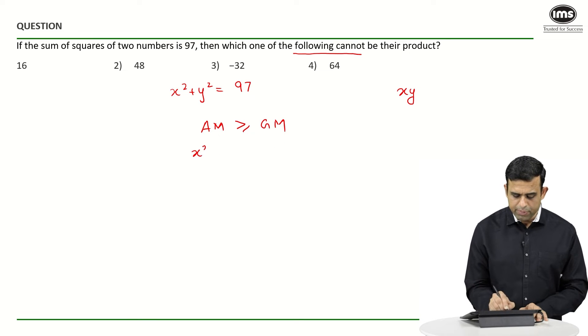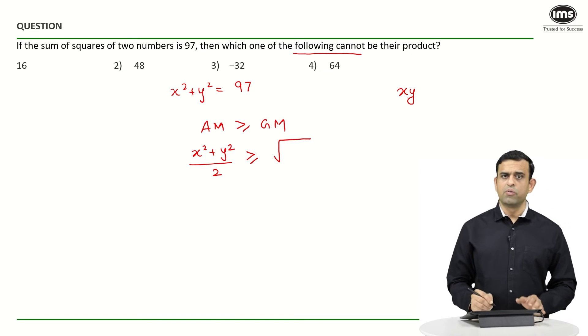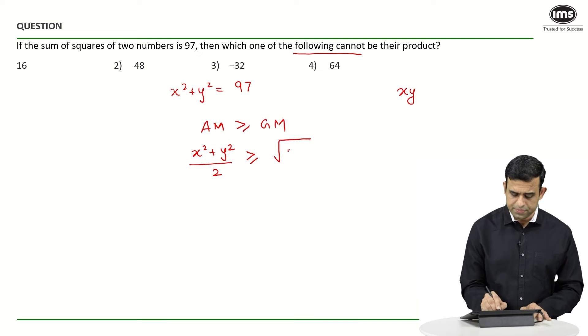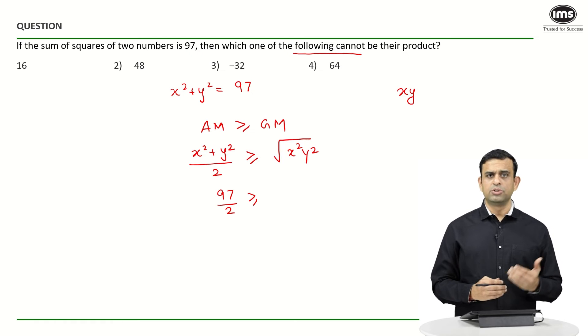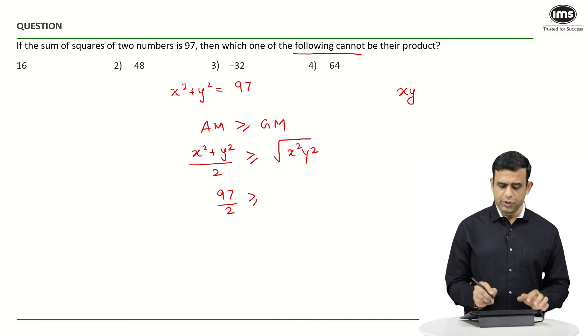Can we say that (x² + y²)/2 should be ≥ √(x² × y²)? So I will now get 97/2 to be ≥ my RHS part, which becomes √(x² × y²) = xy.